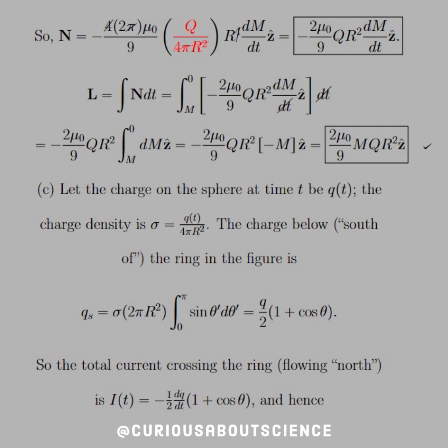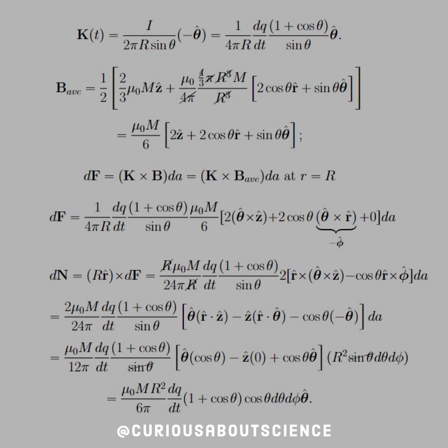So the total current crossing through the ring, flowing north, so to speak, is i(t) equals negative 1/2 dq/dt times 1 plus cosine theta, and hence, if we look at the surface current K(t), that's just i over 2 pi r sine theta—the circumference in the negative theta direction—and just plug everything through. You see we get the negative signs on the current canceling with the negative sign on the direction unit vector. And we see that the average field here is, from the magnetic field, we saw we had a piecewise, so we need to average the two by adding them together and taking the half.